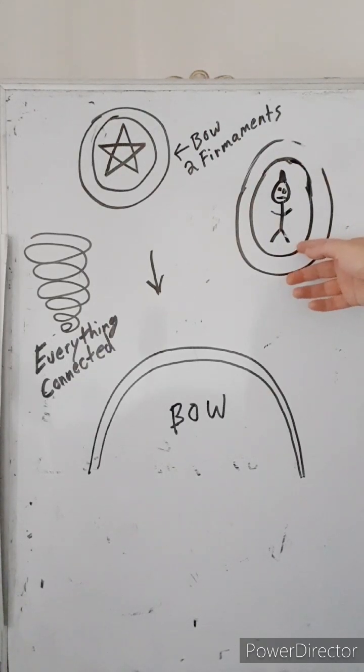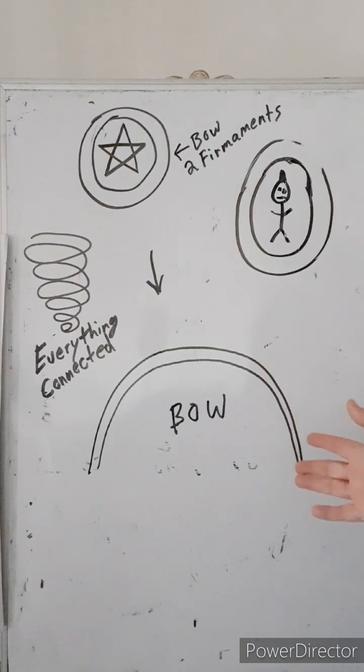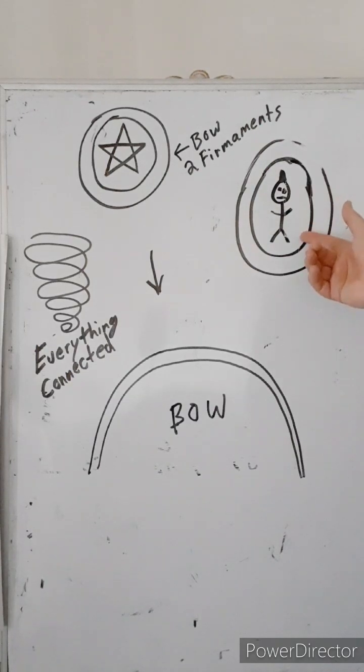This is what you see in the movie Contact when Jodie Foster gets dropped through another wheel within the wheel in this sphere, so to speak, and she travels to another dimension. It's showing you the differences in time and space and heaven. And this is what is above us every night.